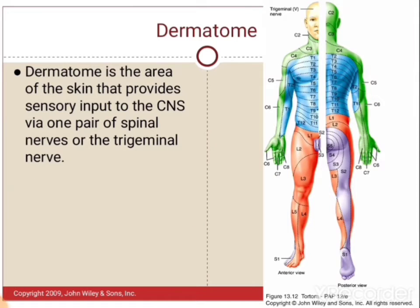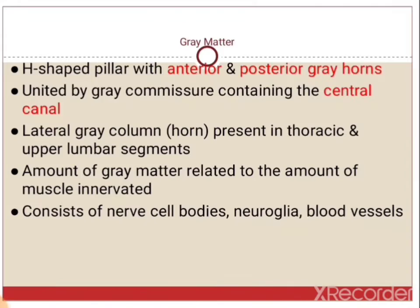There is another term: a dermatome. A dermatome is the area of the skin which is supplied by a pair of spinal nerves. 'Derma' means skin.